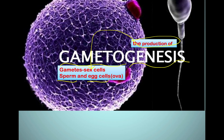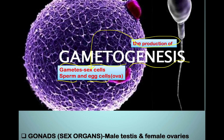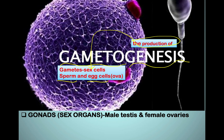The next question we ask ourselves is: where is this process of gametogenesis taking place? It is taking place in the gonads. Gonads are the male and female sex organs. The male gonads are known as the testes, and the female gonads are the ovaries.